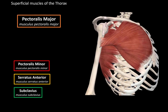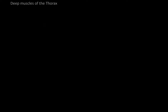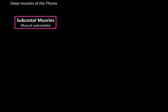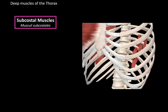So that was it for the superficial muscles of the thorax. Next we have the deep muscles of the thorax, and the first one are the subcostal muscles. These are muscles located on the inside of the thorax on the back. All the muscle fibers of the subcostal muscles originate from the lower rib and they insert on the upper rib. When they contract, they pull the thorax downwards to aid with expiration, so they are part of the expiration muscles.